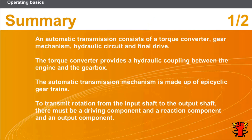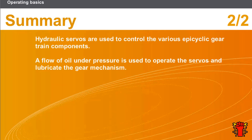In this section we covered the following points: an automatic transmission consists of a torque converter, gear mechanism, hydraulic circuit, and final drive; the torque converter provides a hydraulic coupling between the engine and the gearbox; the mechanism is made up of epicyclic gear trains; transmitting rotation from input to output shaft requires a driving component, a reaction component, and an output component; hydraulic servos control the various epicyclic gear train components; and a flow of oil under pressure operates the servos and lubricates the gear mechanism.